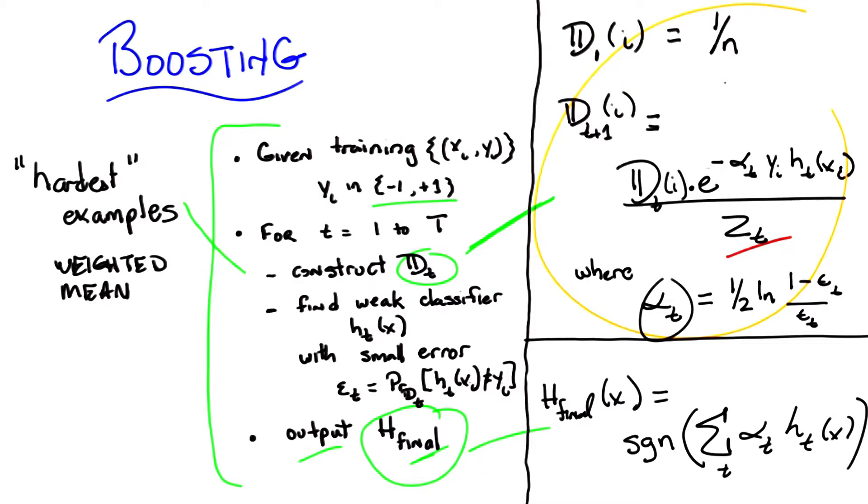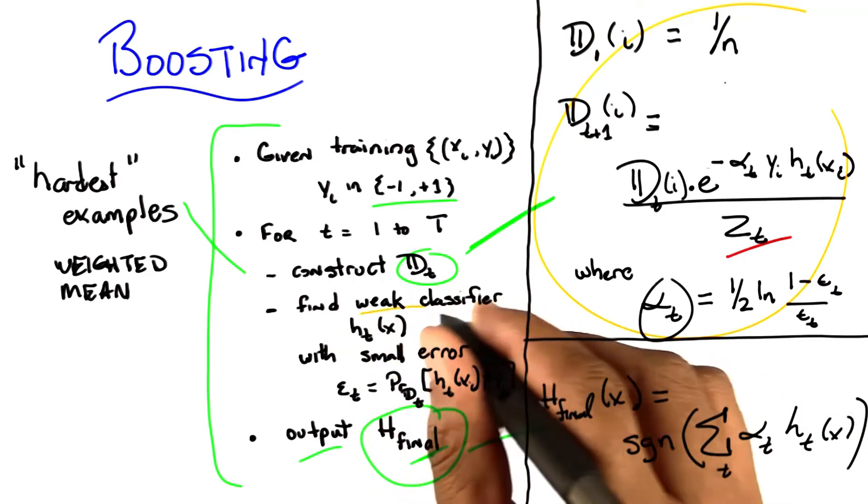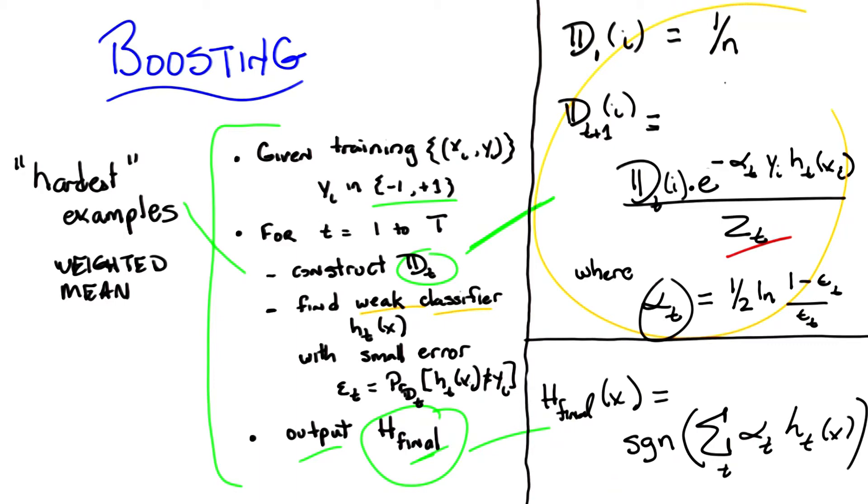And we know that we have the notion of a weak learner. That no matter what happens for whatever distribution, we're always going to be able to find some hypothesis that does well. So if I'm trying to understand why boosting in the end, why the final hypothesis that I get at the end is going to do well, I can try to get a feeling for that by asking, well, under what circumstances would it not do well? So if it doesn't do well, then that means there has to be a bunch of examples that it's getting wrong, right? That's what it would mean not to do well. Agreed? Yeah.